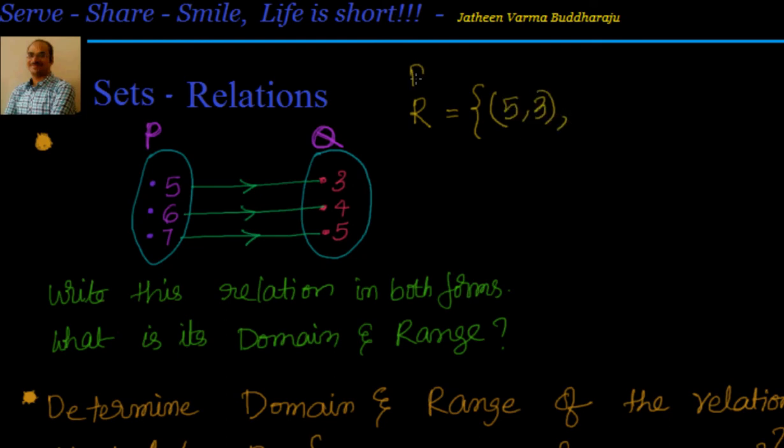And the relation is from P to Q, the order is P to Q, so it will be (5,3), (6,4), (7,5).